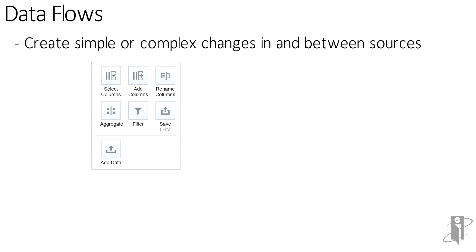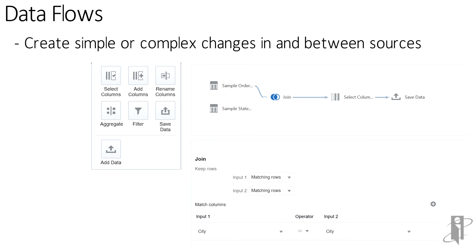In the data flow interface, on the left-hand side you can select columns, add columns, rename them, do aggregations, filtering, save data, and add a secondary data source. In the diagram on the right, you can do things like joins and column selection. In this join example, we tell it what to join on, and in the bottom left we can add our own calculations using standard SQL.